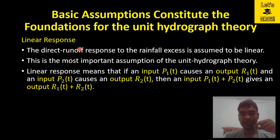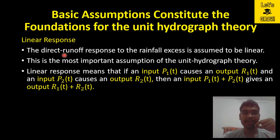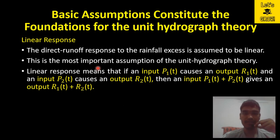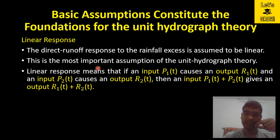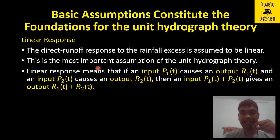The second major assumption for the unit hydrograph theory is linear response. The direct runoff response to the rainfall input is assumed to be linear. This is the most important assumption of the unit hydrograph theory. Linear response means that whenever a catchment produces runoff for any rainfall input, these two terms are correlated linearly.